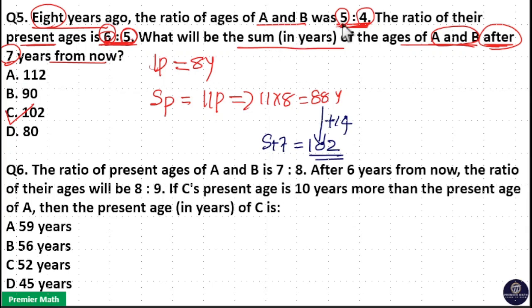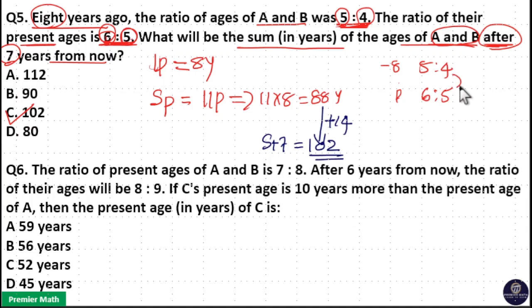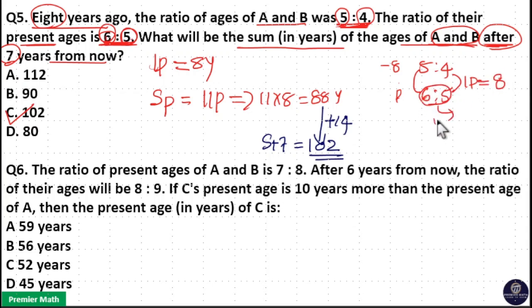To recap: 5 is to 4 is the 8 years ago ratio, and the present ratio is 6 is to 5. You can see 4 increased to 5 and 5 increased to 6, so the total difference is the same — that is one part. One part equals 8 years, and 6 plus 5 is 11 parts, so 11 into 8 is 88 years.